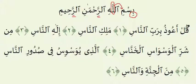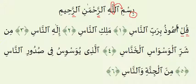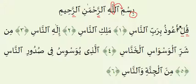Ayah number 1: Qul A'udhu Birabbinnaas. Qaf is a heavy letter, and the Laam is light, so we're going from heavy to light — Qul. Now in the word A'udhu, it is easy to mix up the Hamza and the Ayn. What you really want to do is make the Hamza a very distinct Hamza and the Ayn a very distinct Ayn: A'udhu. The Ayn is two counts long because of the Waw.